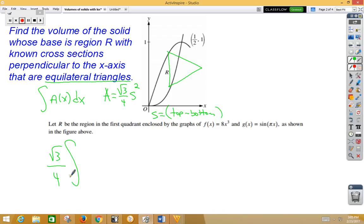And my bounds, they were fortunate to give us 0 to 1 half. And I'm going to have my top function minus my bottom function squared dx. Notice again, it is about the x-axis, so everything is in terms of x.